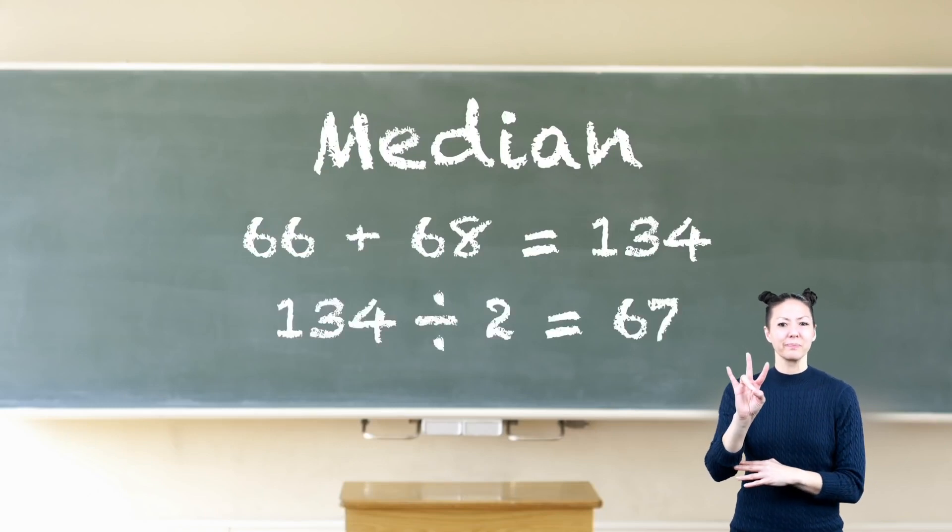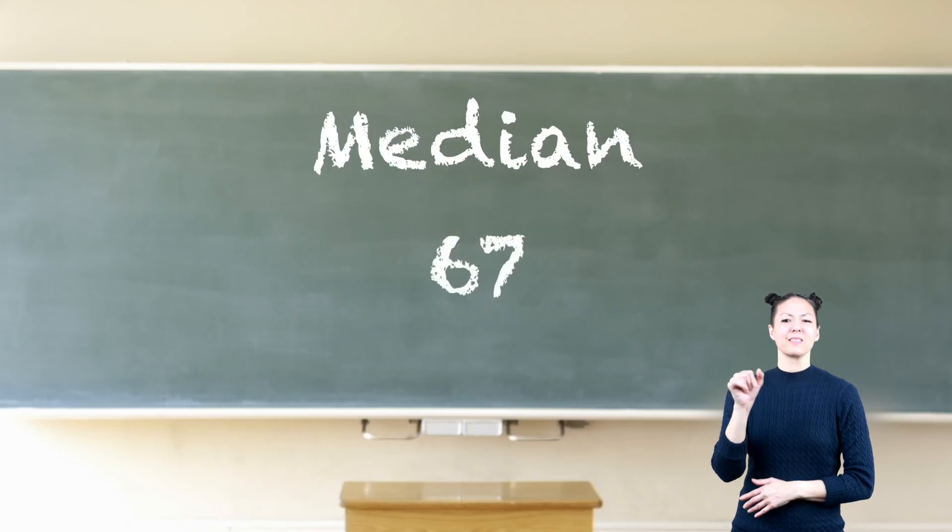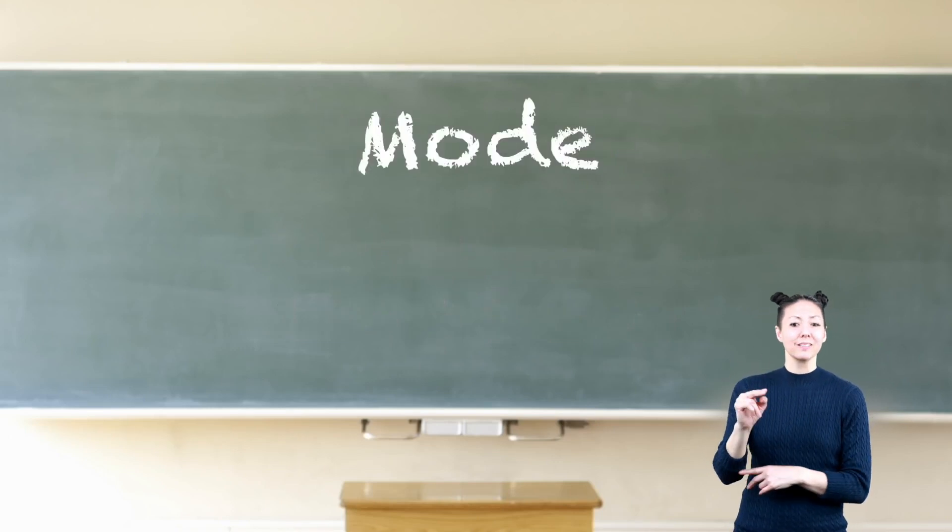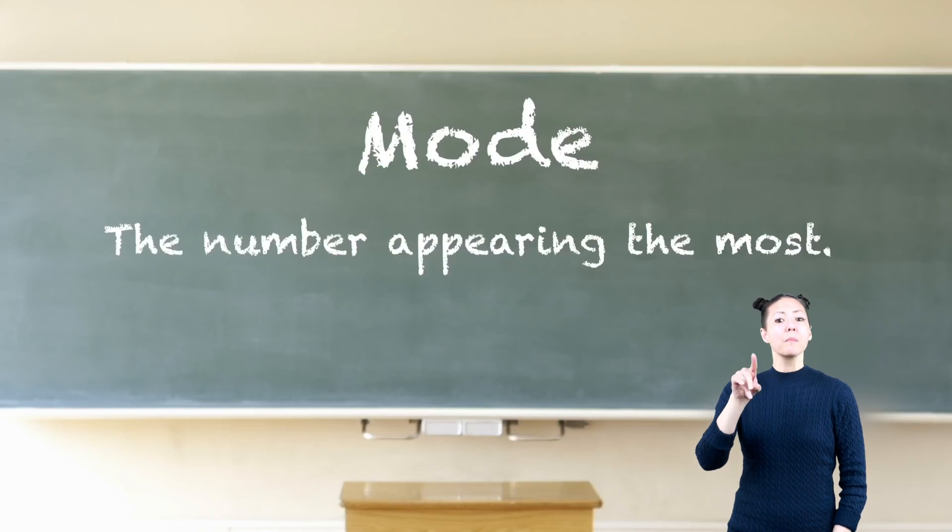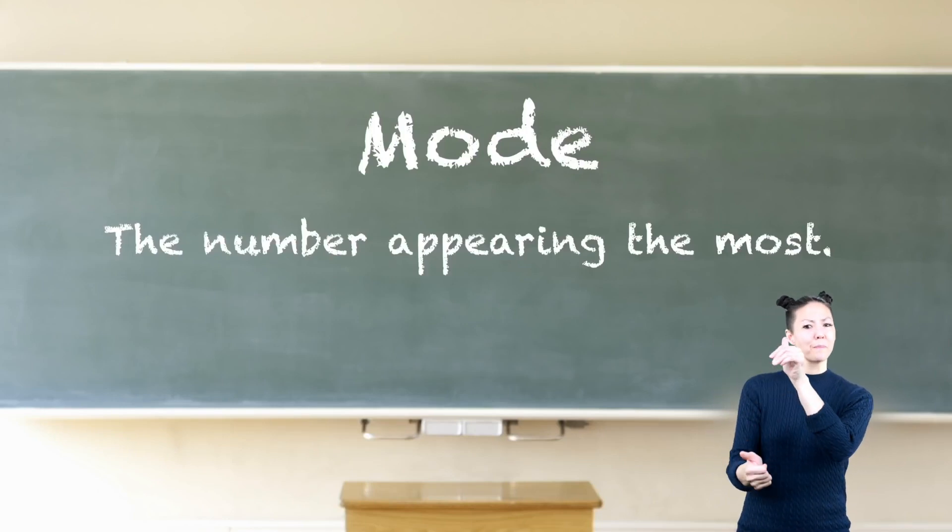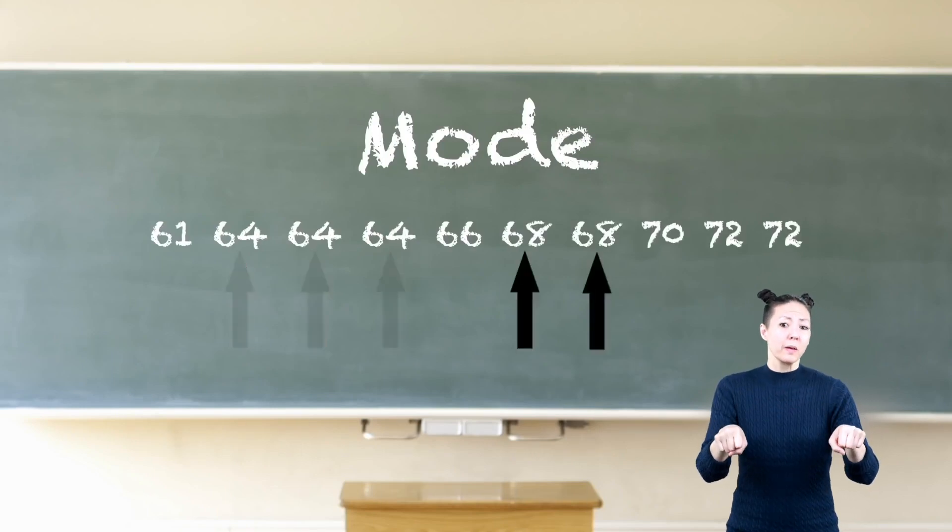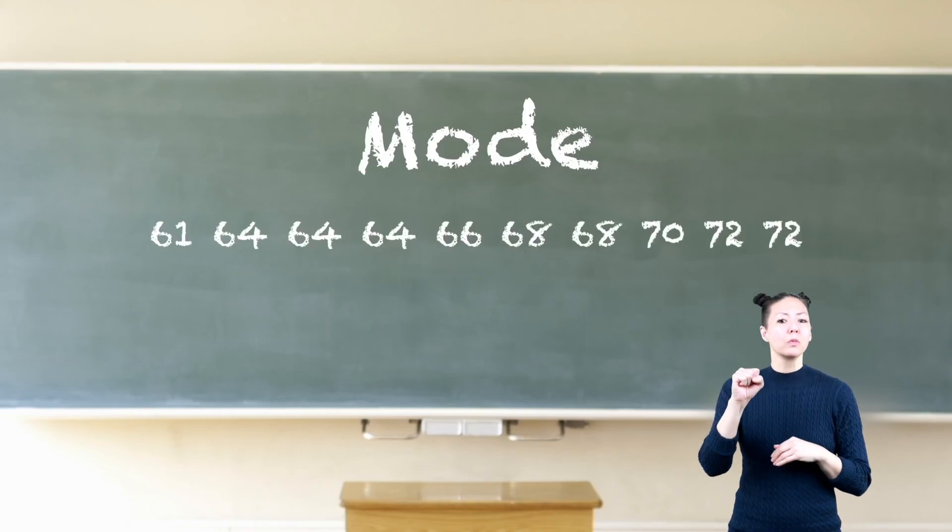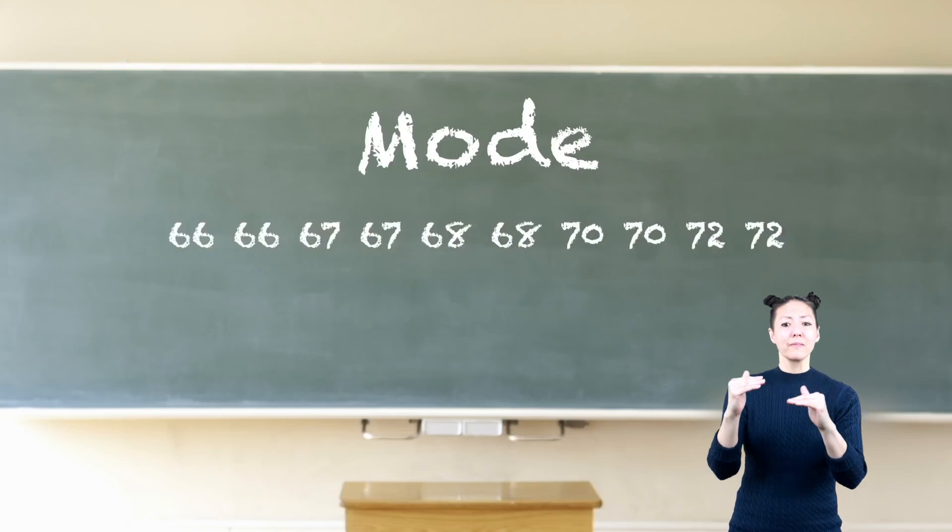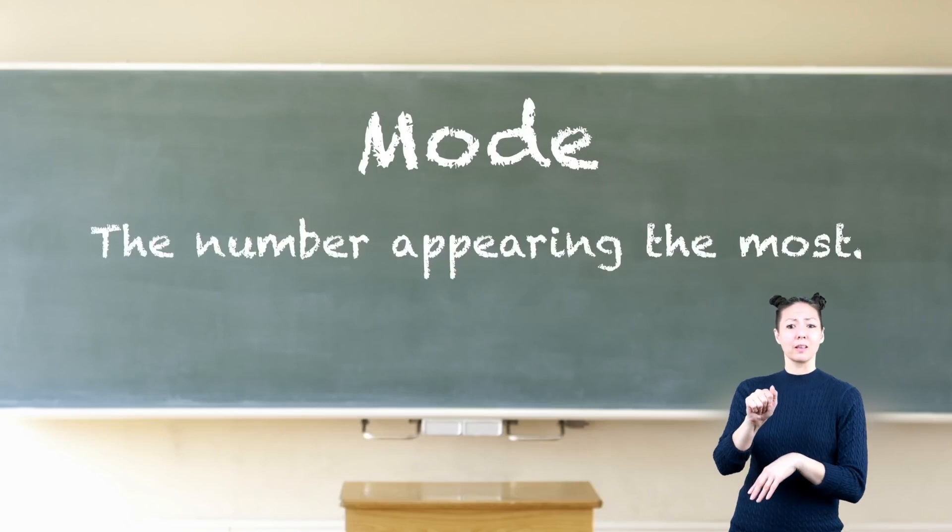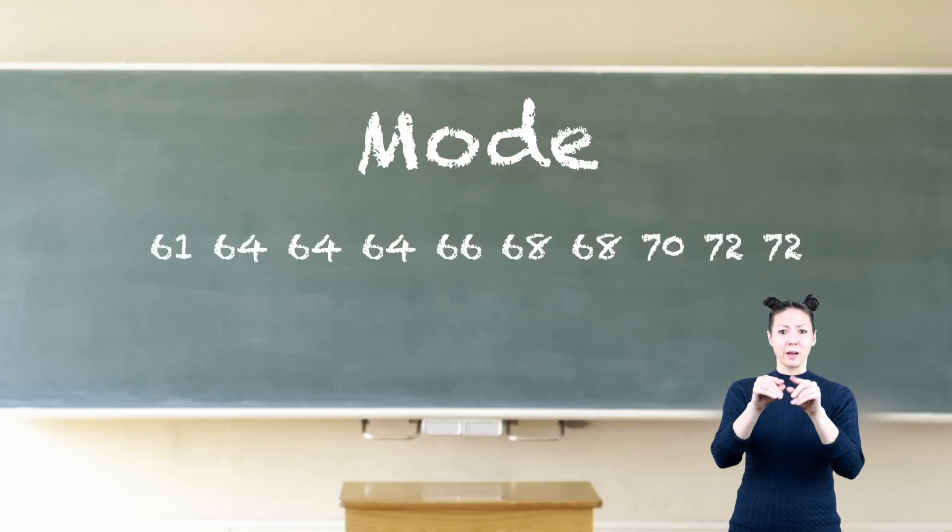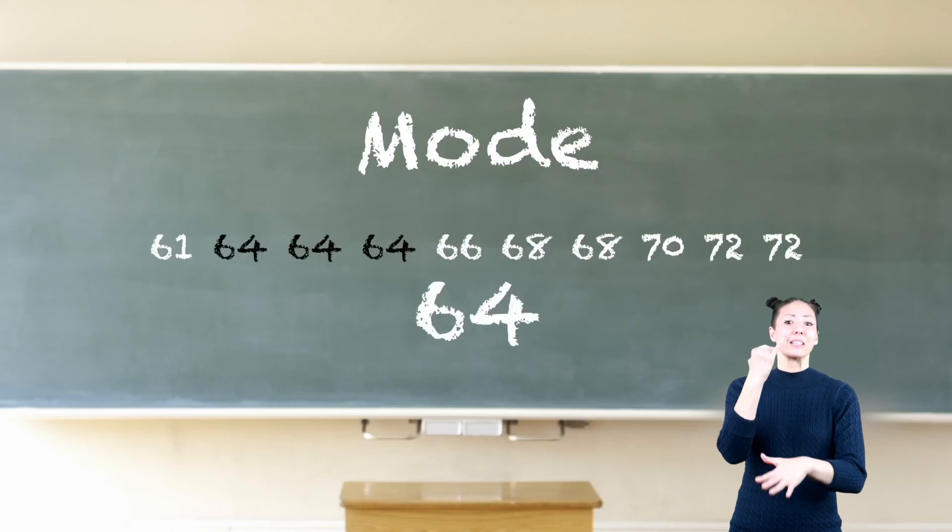Mode: the mode for a set of data is the number appearing the most. If numbers appear an equal number of times, there could be more than one mode. If every number appears an equal number of times, then there is no mode. For example, use the aligned numbers. Which number appears the most? If you said 64, you're right. 64 appears the most so it is the mode.